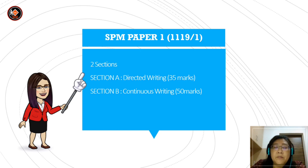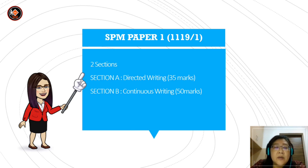For SPN Paper 1, the code is 1119-1. So there are two sections. Section A is directed writing, 35 marks. And Section B is for continuous writing, 50 marks.